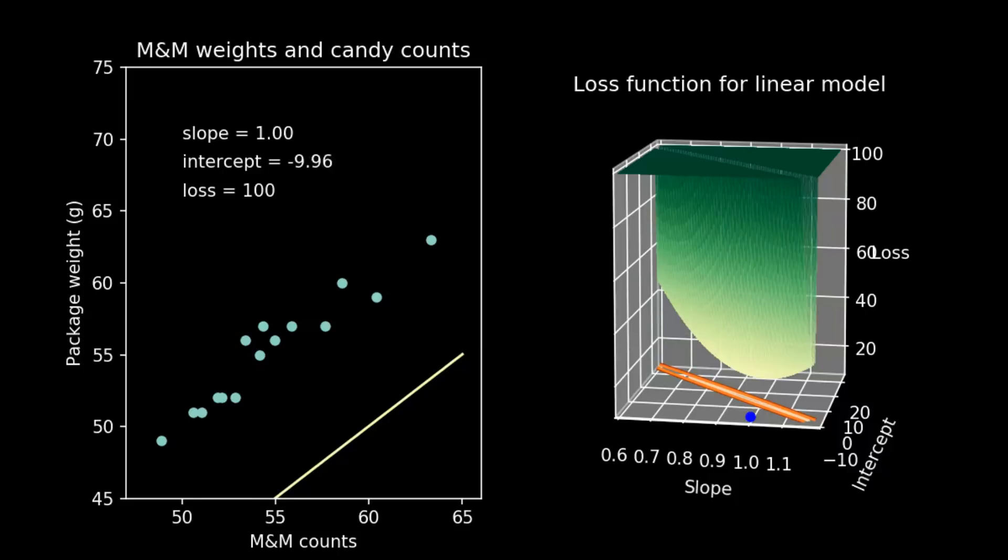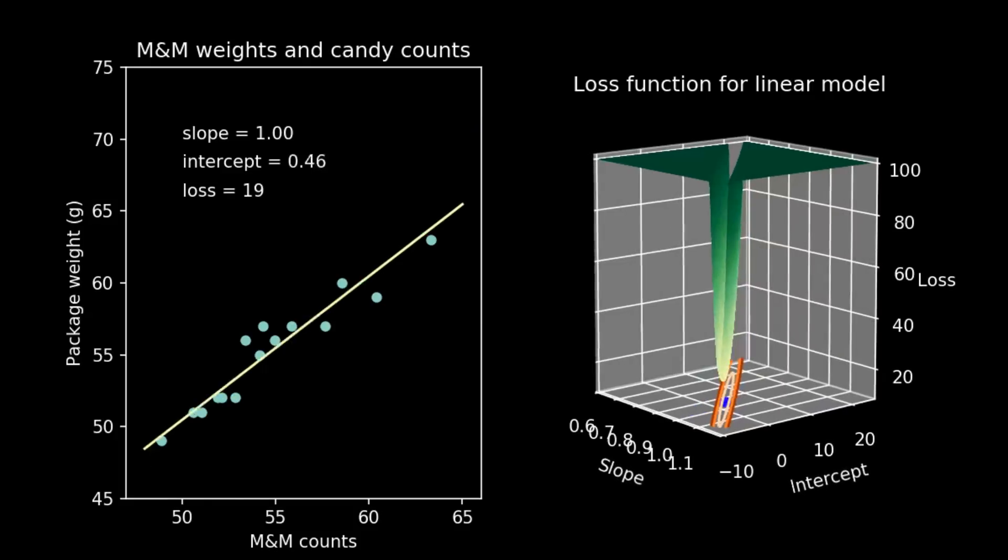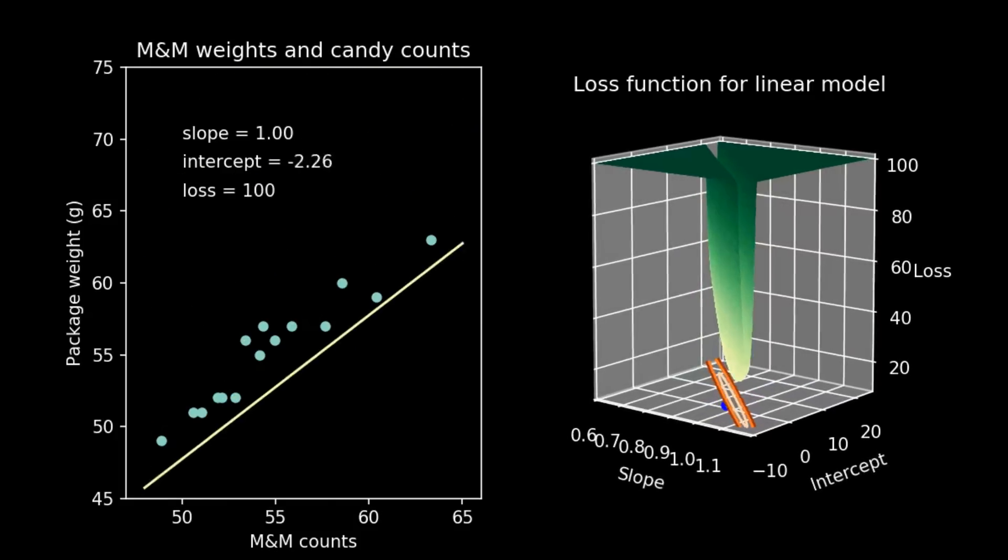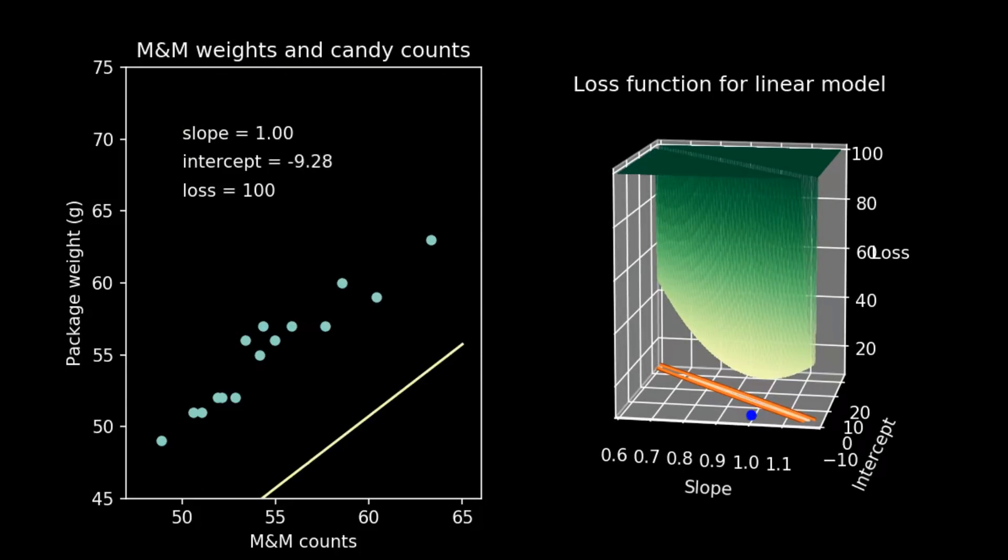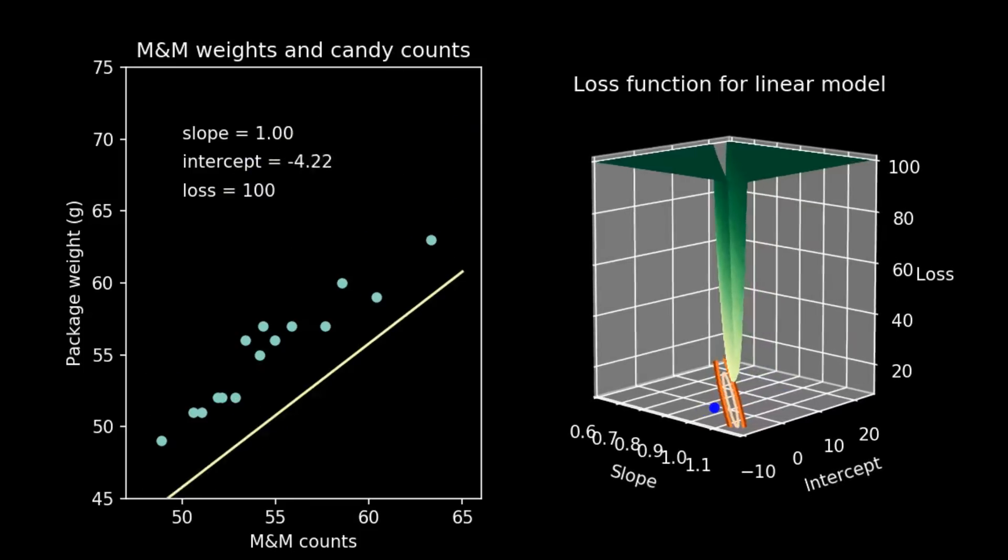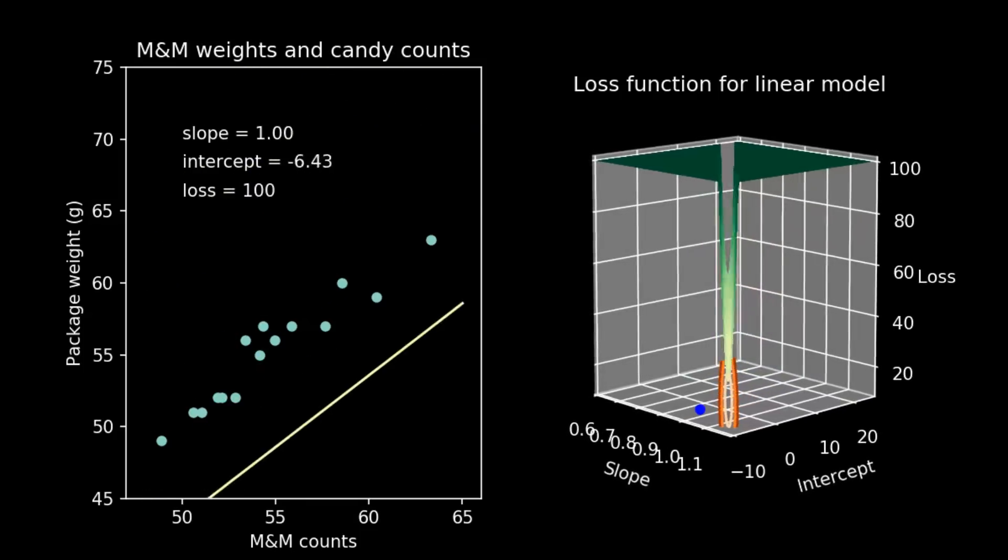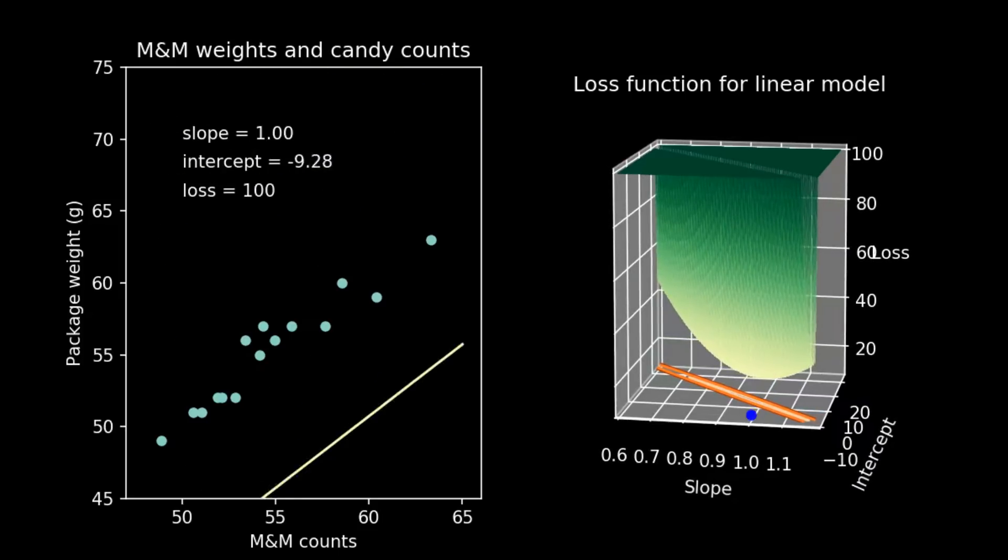Then we can adjust one of our dials. We can shift the intercept up and down. Notice that as the line passes through the data points, the loss gets lower, and once the line moves past the data points, the loss climbs again. There's a point in the middle at which it's quite low, but that's still not quite the lowest value of the loss function across the entire parameter space.